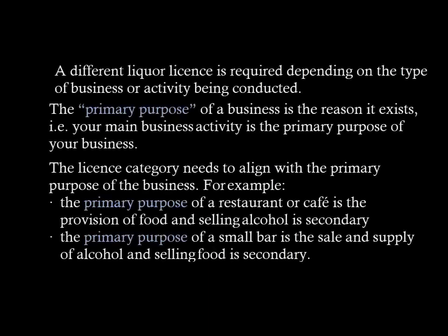There are different types of licenses in New South Wales — a different liquor license is required depending on the type of business or activity being conducted. The primary purpose of a business is the reason it exists, i.e., your main business activity. The license category needs to align with the primary purpose of the business. For example, the primary purpose of a restaurant or cafe is the provision of food, and selling alcohol is secondary, while the primary purpose of a small bar is the sale and supply of alcohol, and selling food is secondary.